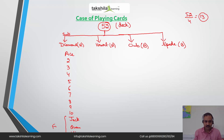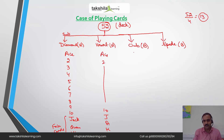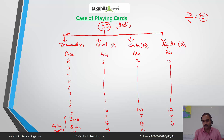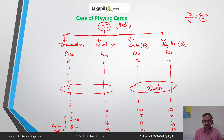Each suit contains cards from Ace, 2 through 10, then Jack, Queen, and King. Jack, Queen, and King are known as face cards. Club and spade are black-colored suits, while diamond and heart are red-colored suits.